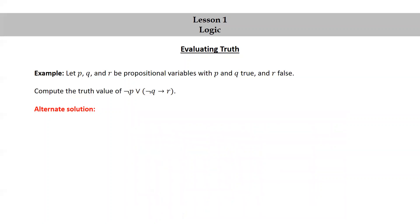The truth table solution provides a lot more information than was actually required to answer the question. This alternate solution will be a little more streamlined. Starting with not p or not q implies r, we're simply going to replace each propositional variable by the truth value that it's assigned. p and q will be replaced by T's and r by F, to get: not T or not T implies F.